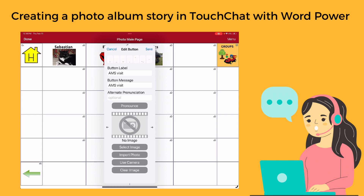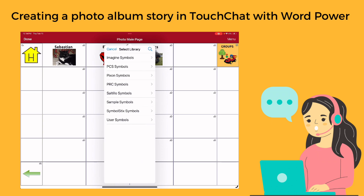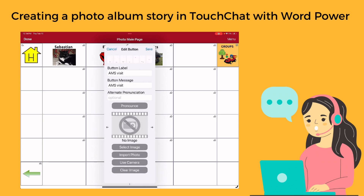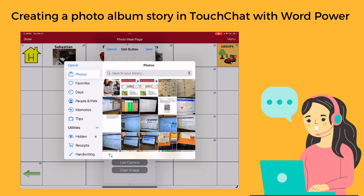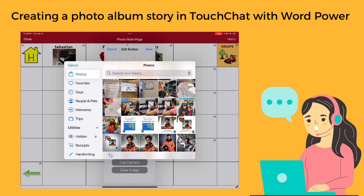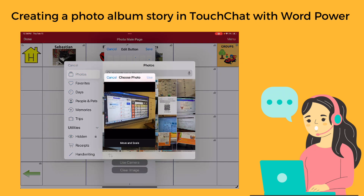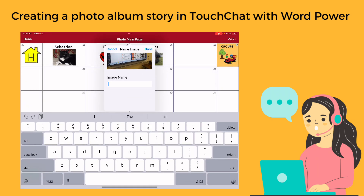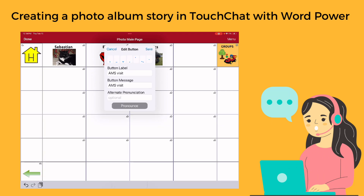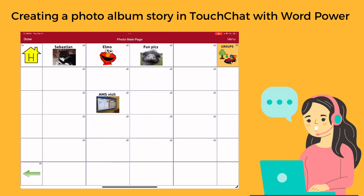I'll pick a picture for just this cover image. I'm going to say let's import a photo. We're going to go out to our photo pages and I'm just going to select a photo — I'll pick this one and say use. And then I'm going to name it AMS visit. That will save it in my library. Let's hit done and save. So there it is right there.